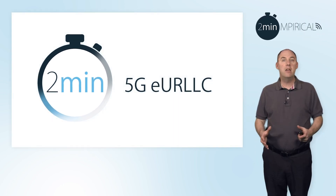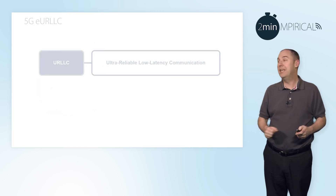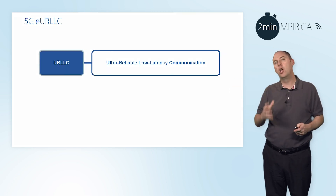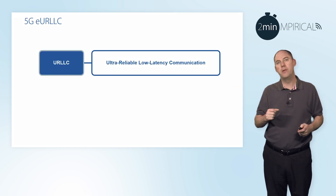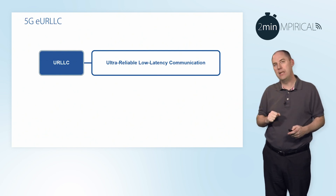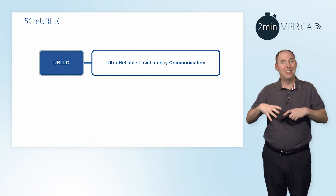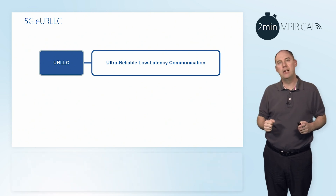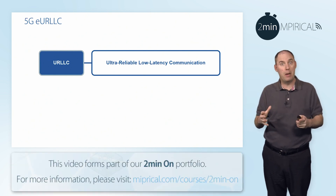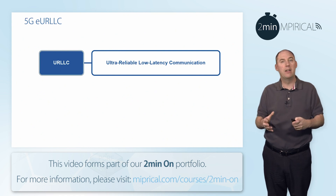A key service type with respect to 5G is ultra-reliable low-latency communications, or URLLC. Now that was part of the initial design of 5G, and the first release from 3GPP — Release 15 — included some elements of that.